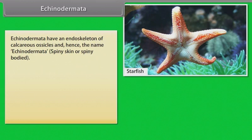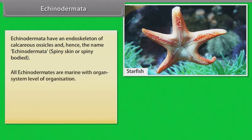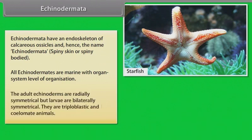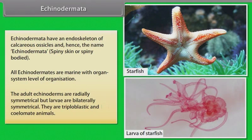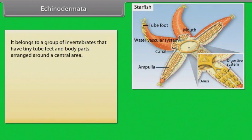Echinodermata have an endoskeleton of calcareous ossicles, and hence the name Echinodermata, which means spiny skin or spiny bodied. All Echinodermata are marine with organ system level of organization. The adult Echinodermata are radially symmetrical, but larvae are bilaterally symmetrical. They are triploblastic and coelomate animals, belonging to a group of invertebrates that have tiny tube feet and body parts arranged around a central area.